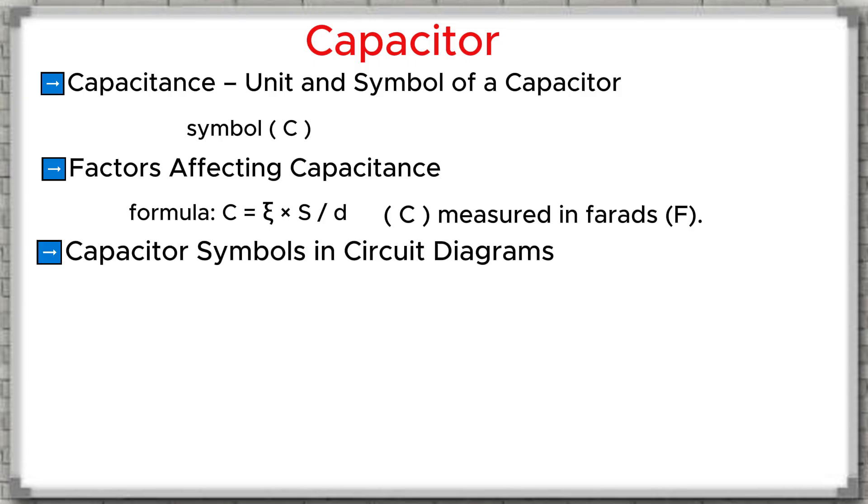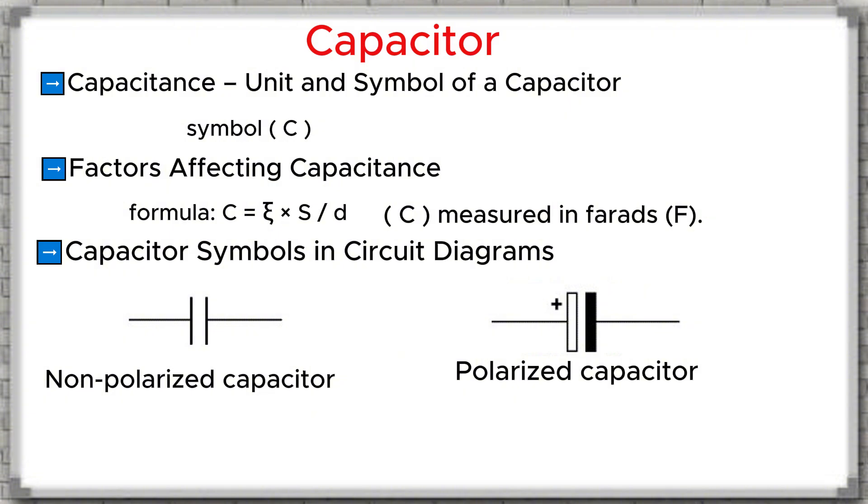Capacitor symbols in circuit diagrams: Non-polarized capacitor, shown as two parallel lines of equal length. Polarized capacitor, shown as one straight line and one curved line or with a plus sign at the positive terminal. In circuit diagrams, capacitors are usually labeled as C1, C2, C3, and so on.